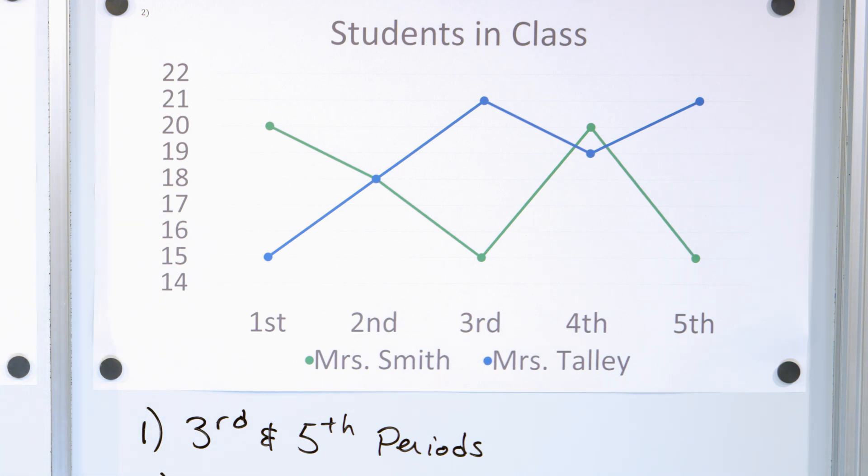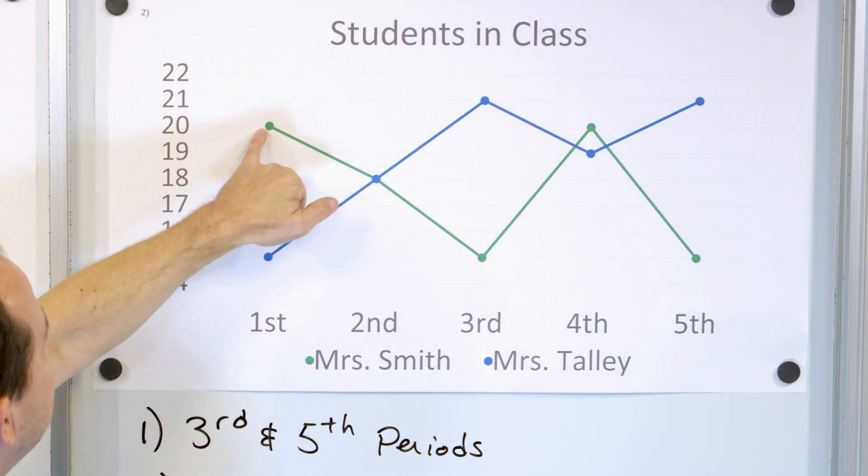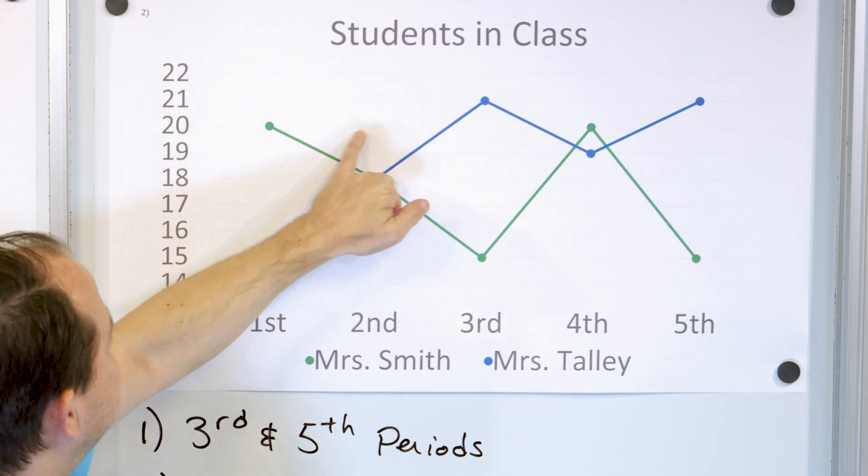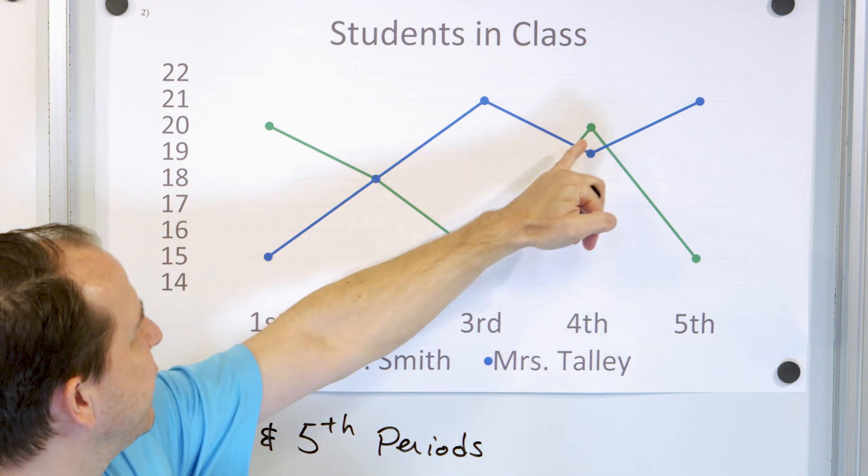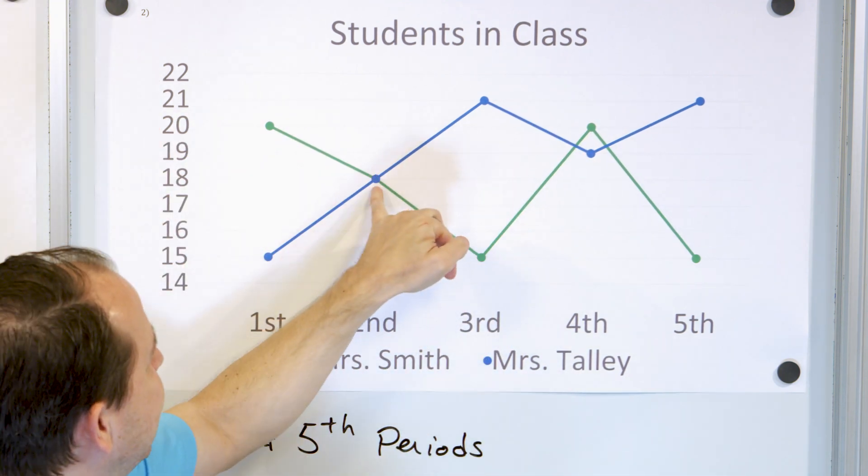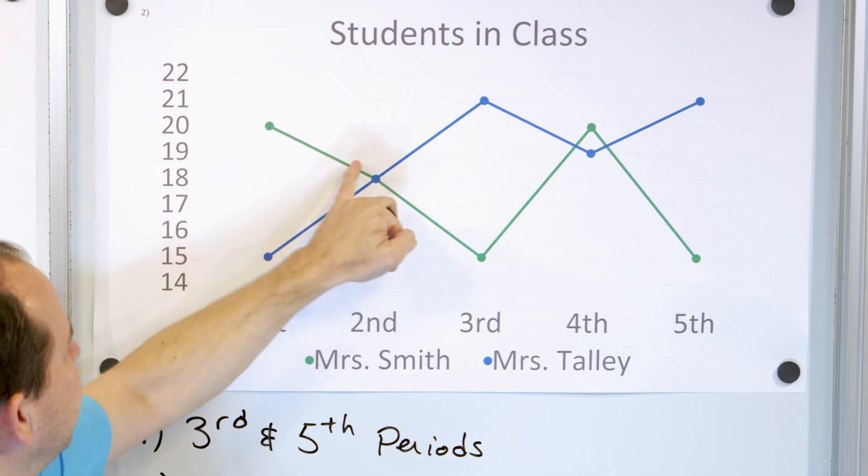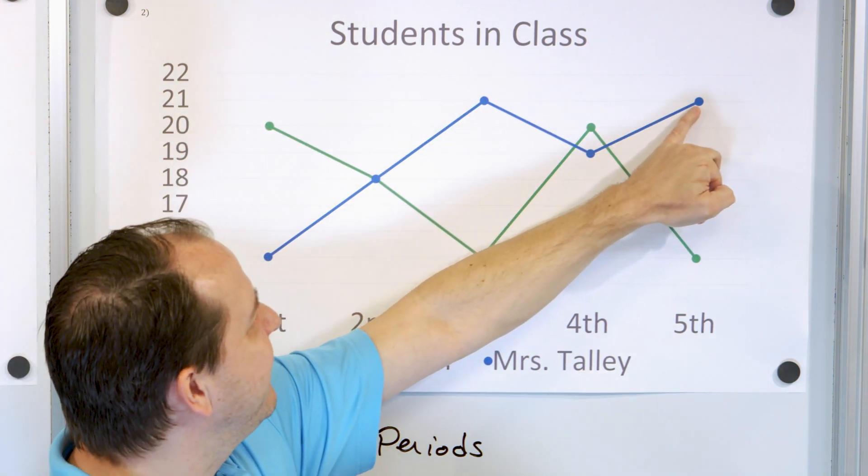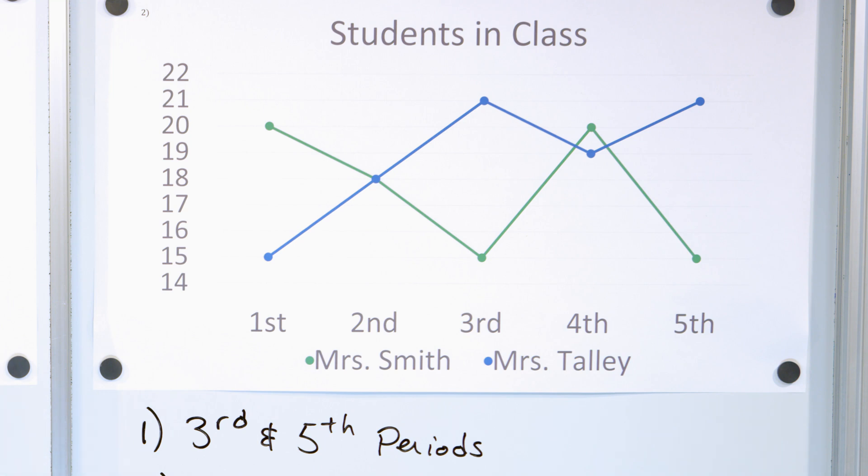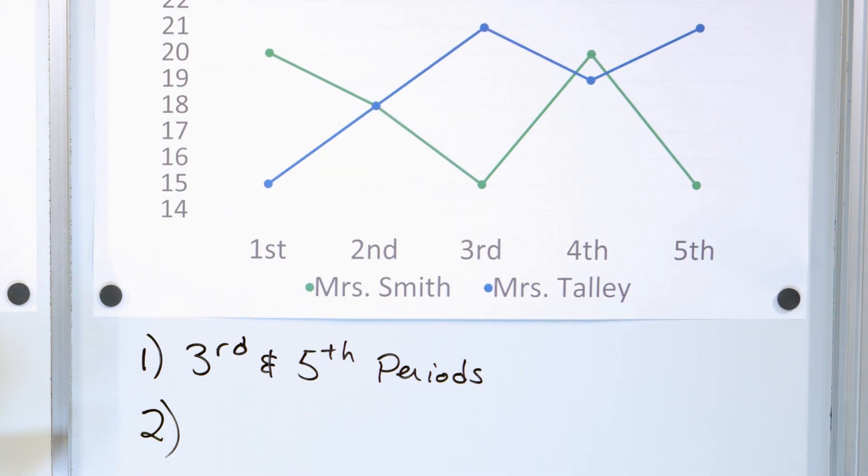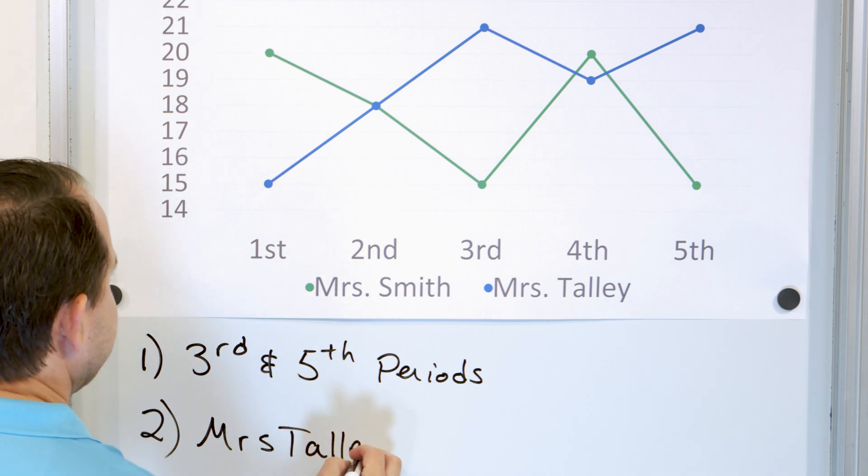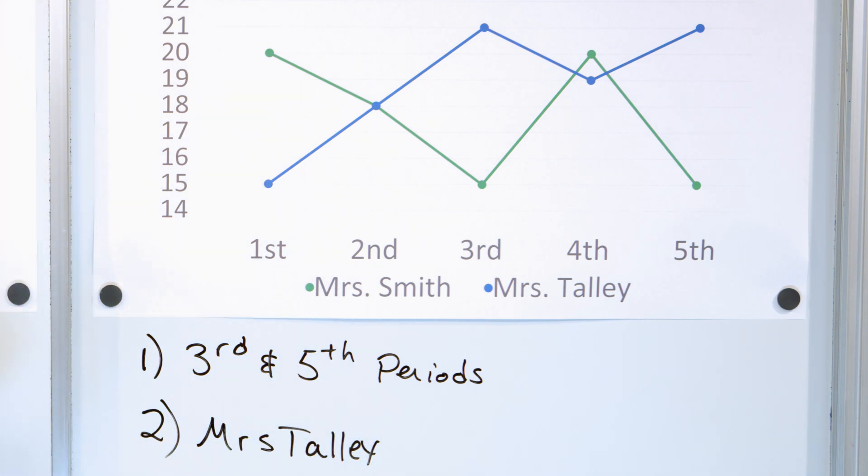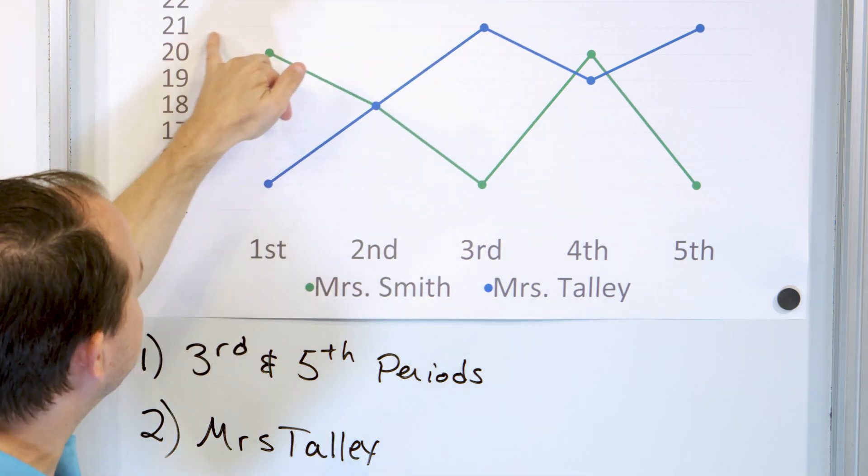All right. Problem number two, who has the most students over the five periods? Who has the most students? Well, you basically look at the top of the graph. You have the green, the highest place the green gets is 20 students. The highest place Mrs. Smith in green gets here is, again, 20 students. But Mrs. Talley gets to a maximum of 21 students. And again, in fifth period, she gets down again to a maximum of 21 students. So who has the most students throughout the day? It's going to be Mrs. Talley. And again, she has two different periods that have the same number of students, which is her maximum at 21.